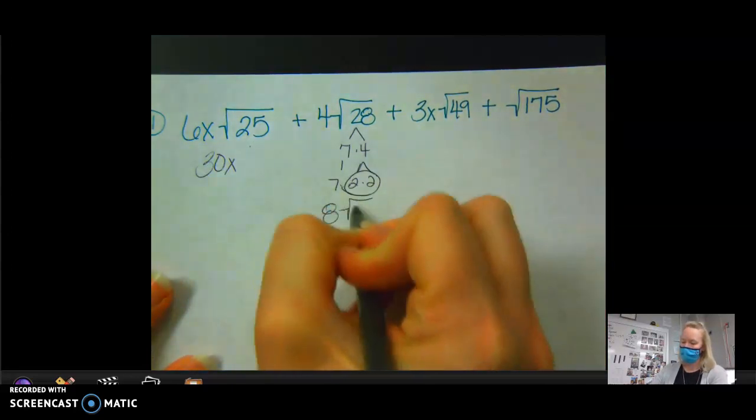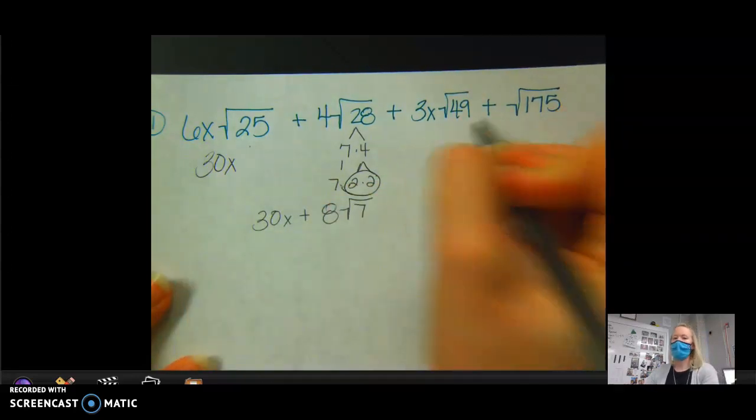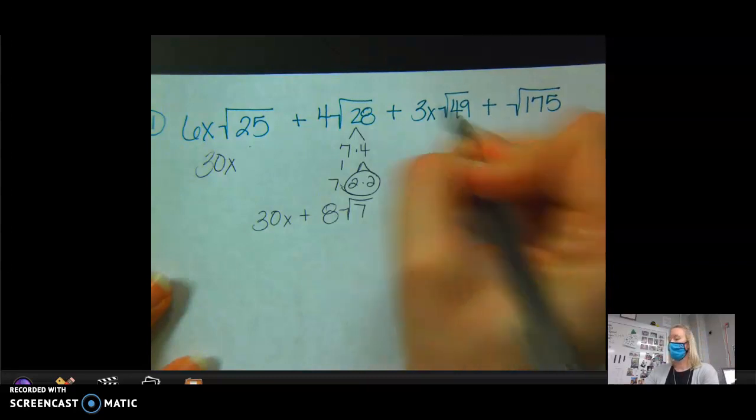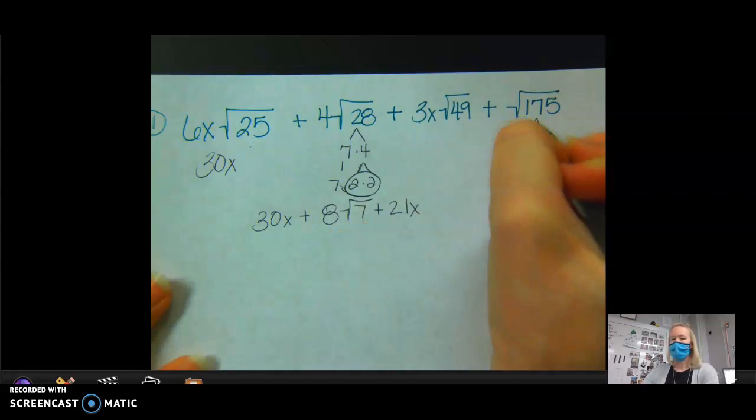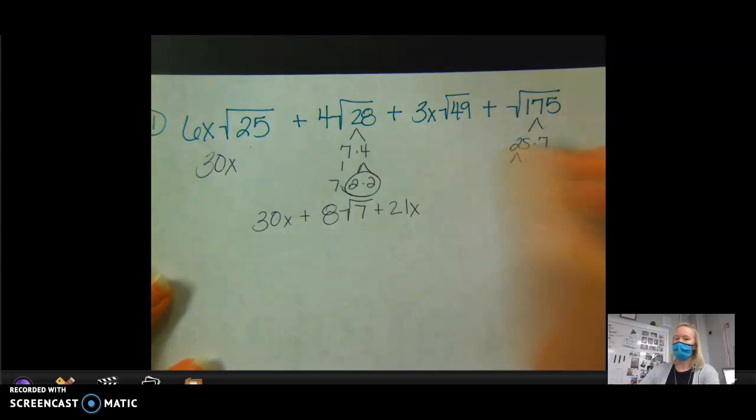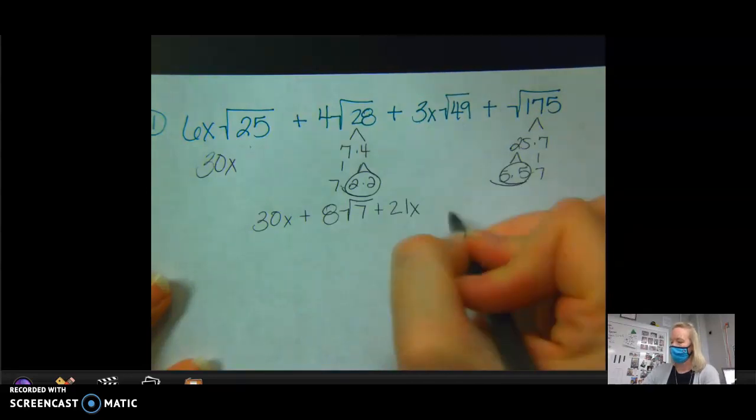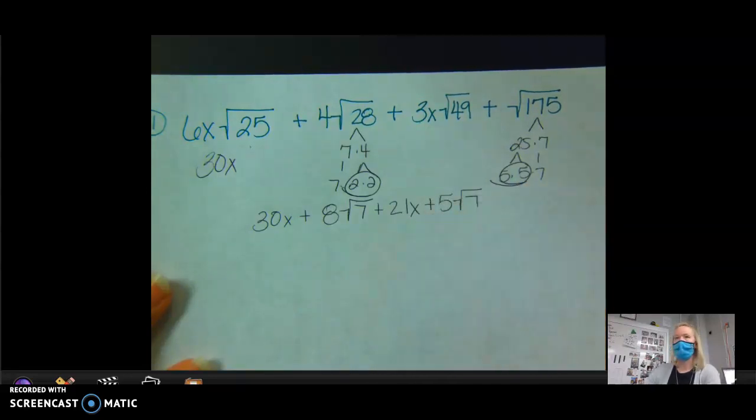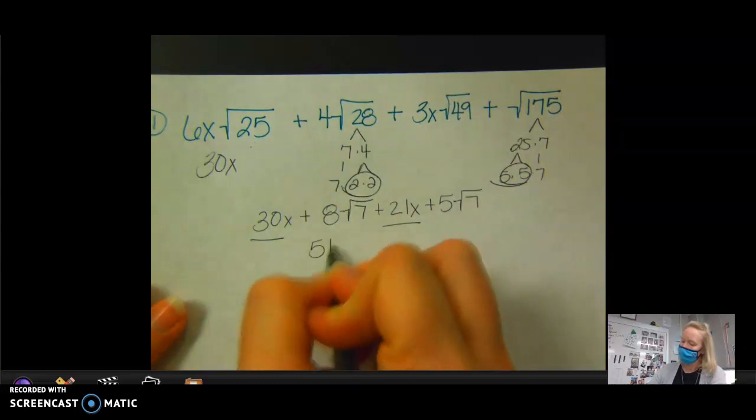8 square roots of 7. What's the square root of 49? 7 times 3x is 21x. 175 breaks down into 25 times 7. I have a pair of 5s that comes out. Multiply to that 1, so that's 5 square roots of 7. Now combine my like terms. So this combines with this to give me how much? Perfect.